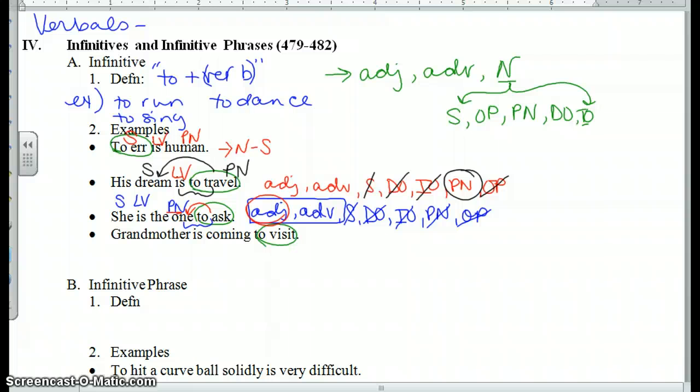Grandmother is coming to visit. Here I have is coming, action verb. Who or what is coming? Grandmother is. If I was eliminating, I've eliminated a subject and a predicate nominative. There's no prepositions, I've eliminated that. Do I have a direct object? Nothing receives the action of coming. It isn't that kind of a verb, it's intransitive. So to visit seems to be telling me where or why she is coming. If something answers where or why and points at a verb, it makes it an adverb.